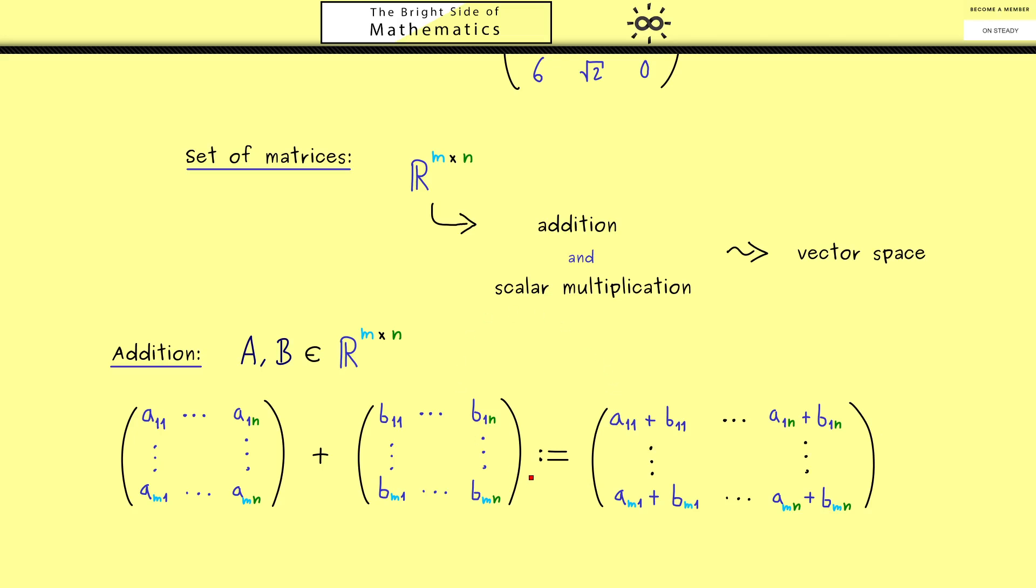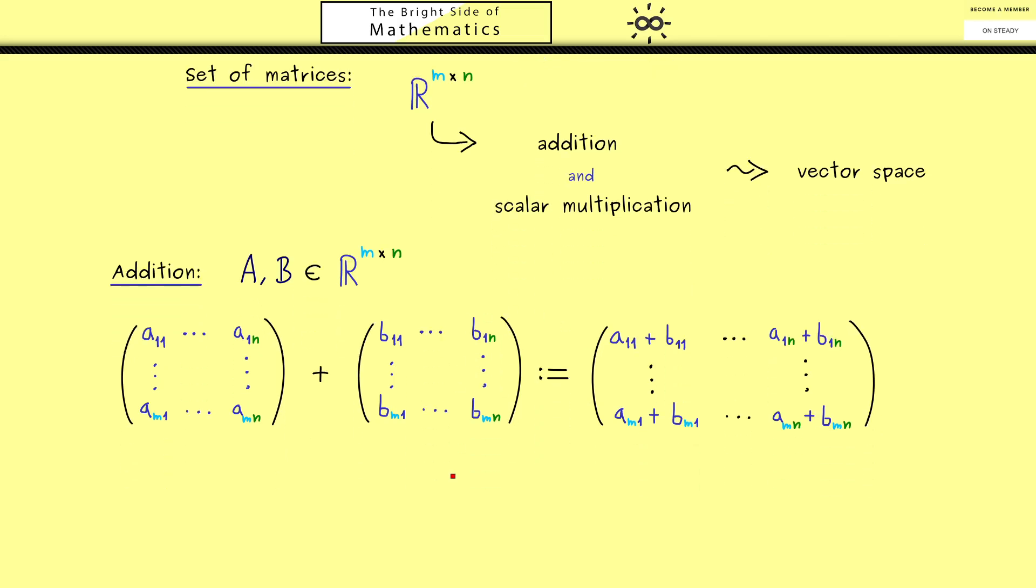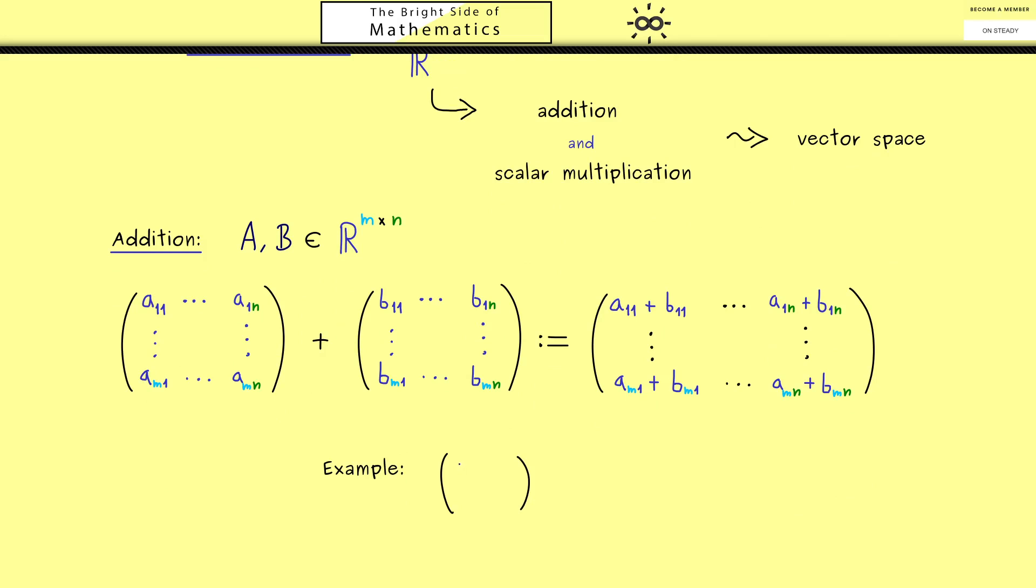Okay then I would say let's also look at a quick example. So maybe we just use a 2x2 matrix with the numbers 1,2,3,4. And then we add the matrix 1,0,2,1.